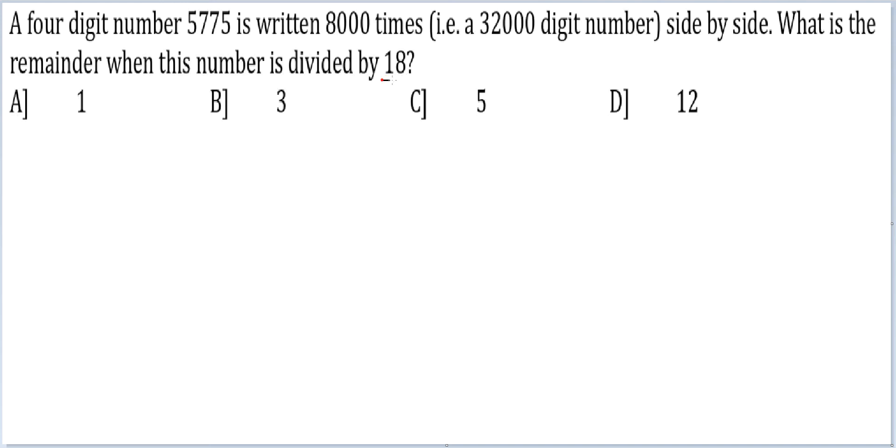If you're looking for remainder with 18, you're looking for remainder with 2 and 9. Now, because the number is 5775, the unit digit will continue to be an odd number, and therefore the remainder you end up getting will necessarily be odd. Therefore this cannot be the answer.